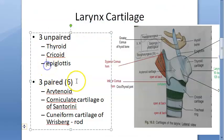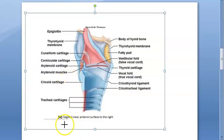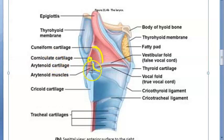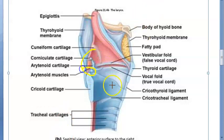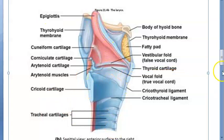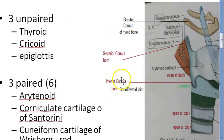So there are nine cartilages total — three unpaired and three paired. Looking at this diagram: the arytenoid cartilage has the corniculate above it like a small circle, and in front of that the rod-shaped cuneiform. There will be two of each — two arytenoids, two corniculates, and two cuneiforms — totaling six paired. The unpaired ones are the cricoid, thyroid, and epiglottis.